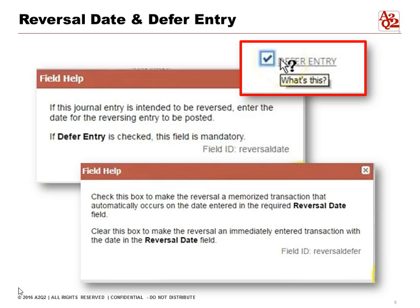The next part is a little more confusing. If deferred date is checked, this field is mandatory. Your next question is: what is a deferred entry? When you look into the help field for defer entry, it says: check this box to make the reversal a memorized transaction that automatically occurs on the date entered in the required reversal field. Clear this box to make the reversal an immediately entered transaction with the date in the reversal field. This is a little confusing, so we'll actually show you the transaction and what that means.